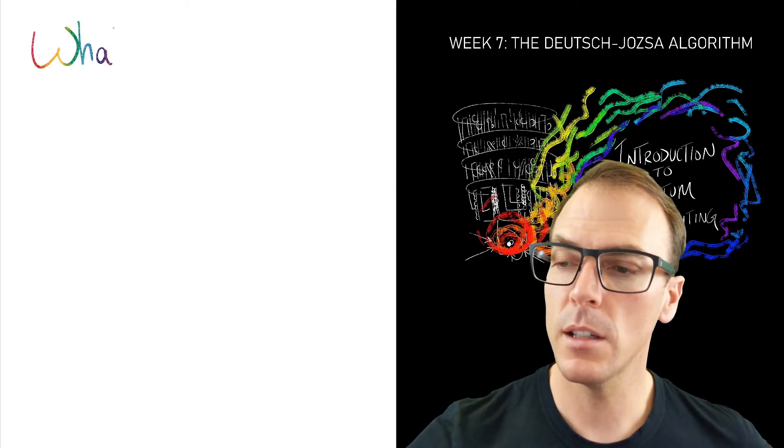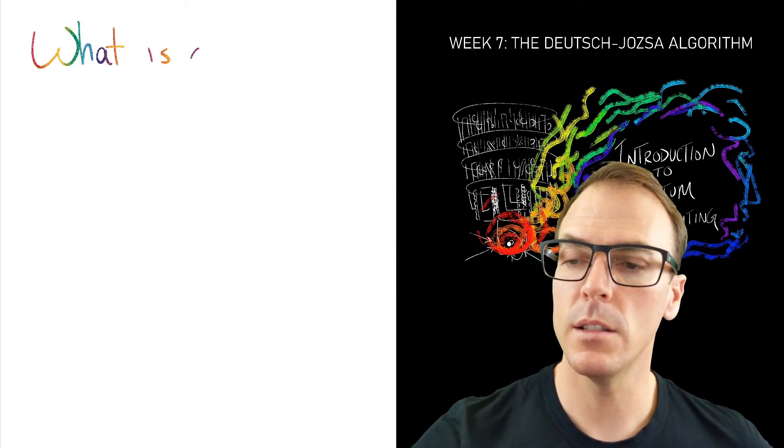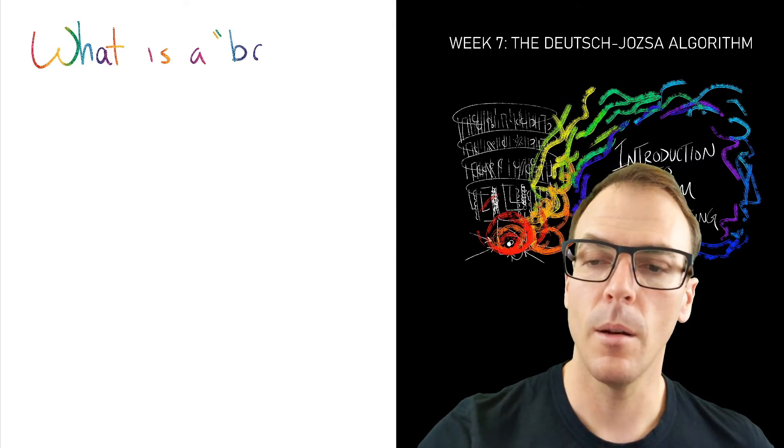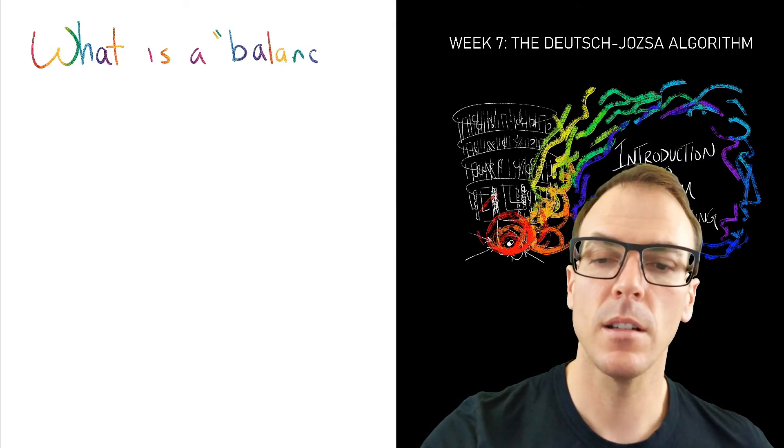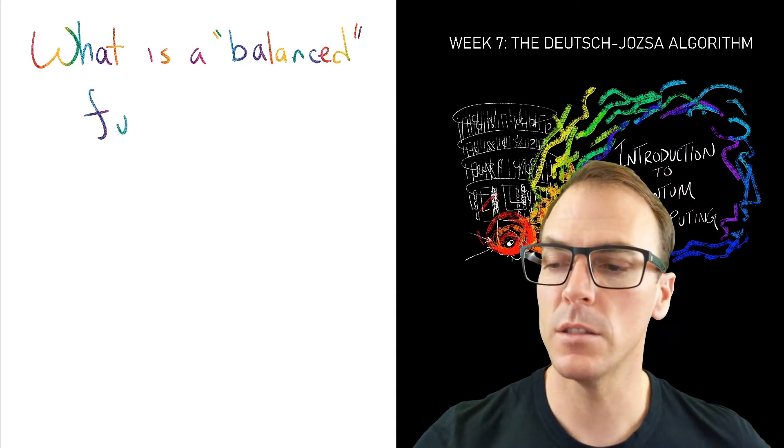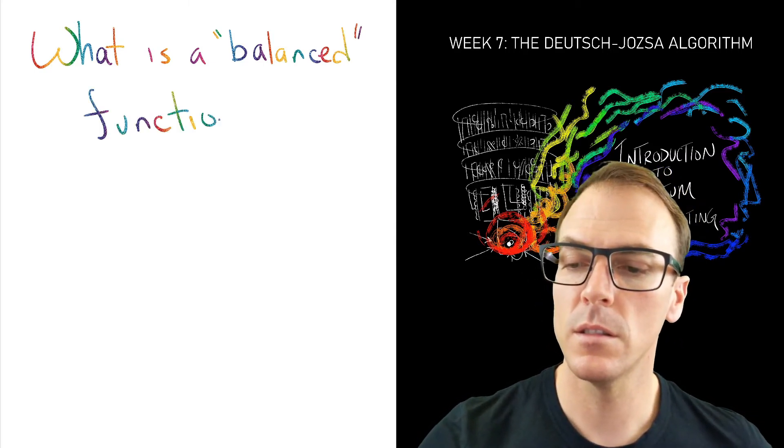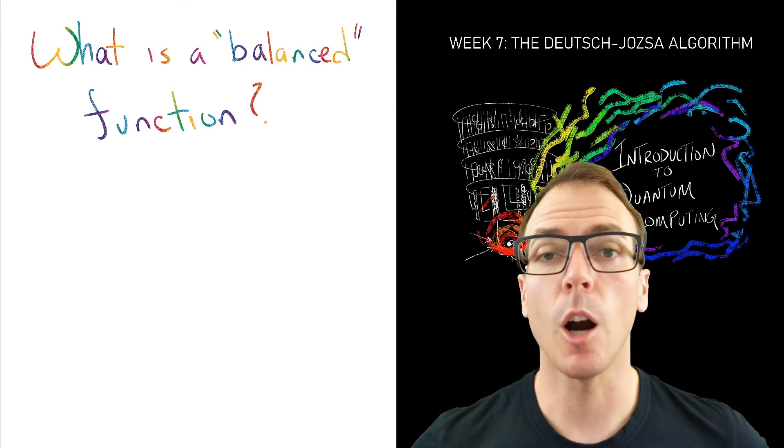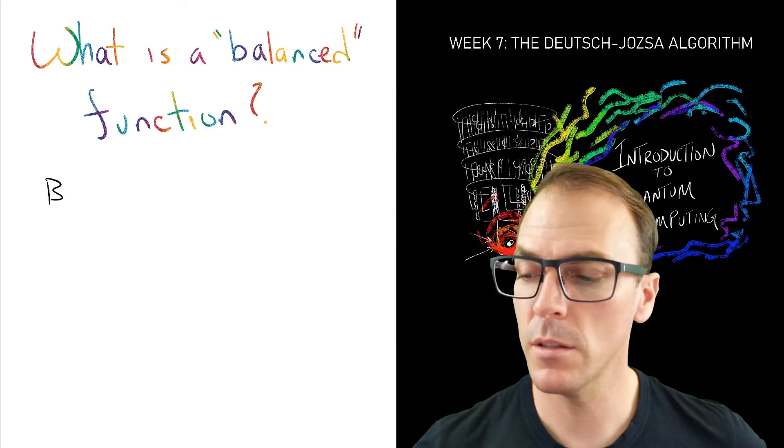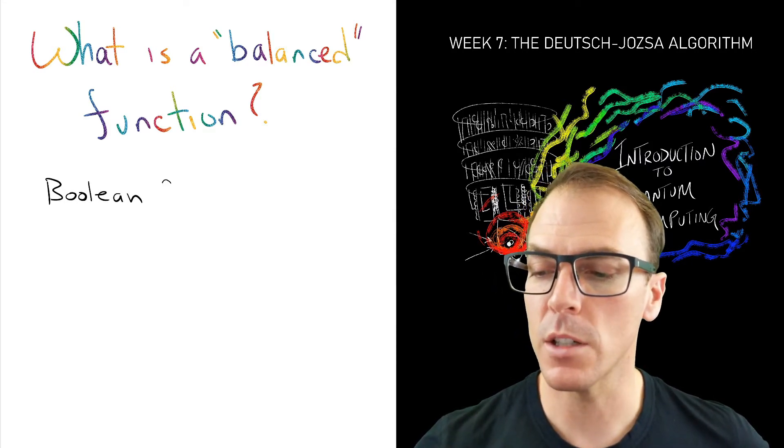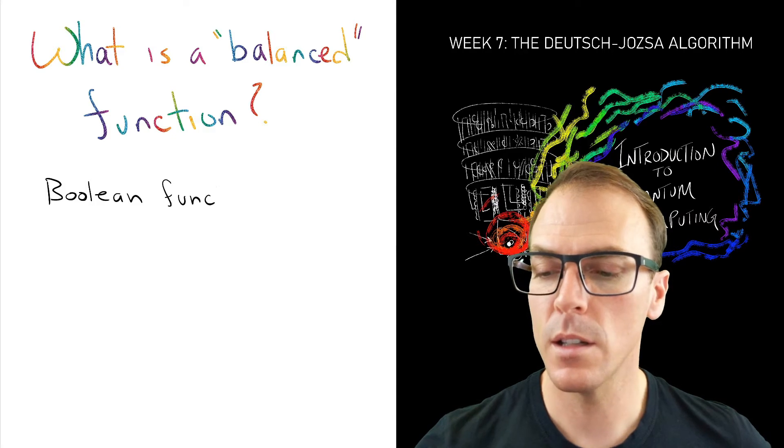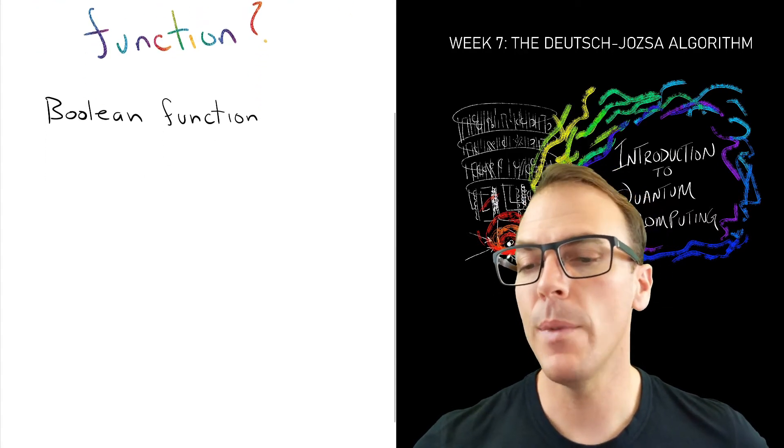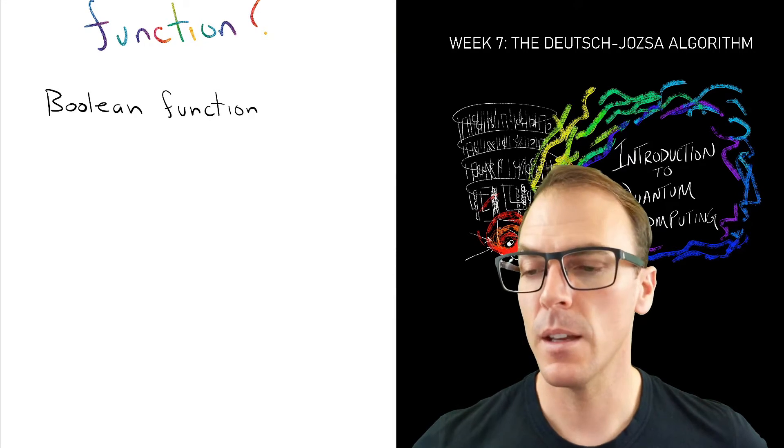So the first thing we need to do is ask, what is a balanced function? Okay, so the functions that we're going to be talking about are Boolean functions, and Boolean functions are ones that map to bits, in fact a single bit. So a function that takes as input something and produces one bit is a Boolean function.